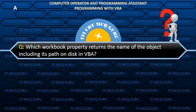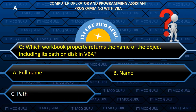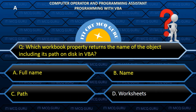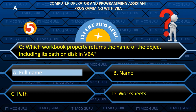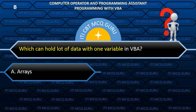Which workbook property returns the name of the object including its path on disk in VBA? Answer: A. FullName. Which entity can hold a lot of data with one variable in VBA? Answer: B. Collections.